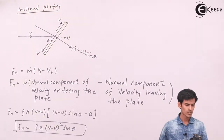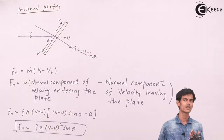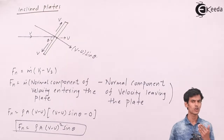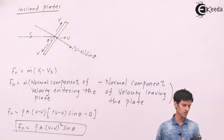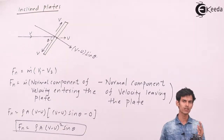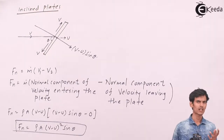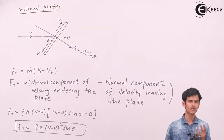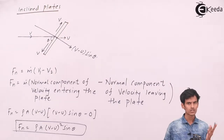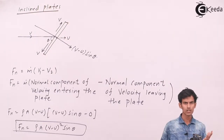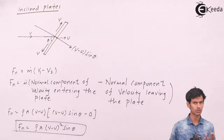The formula for the normal component of force exerted on the inclined plate is ρA(V − U)² sin θ. We can then easily calculate the x and y components: the x component of force is sin θ times the normal component, and the y component of force is cos θ times the normal component.